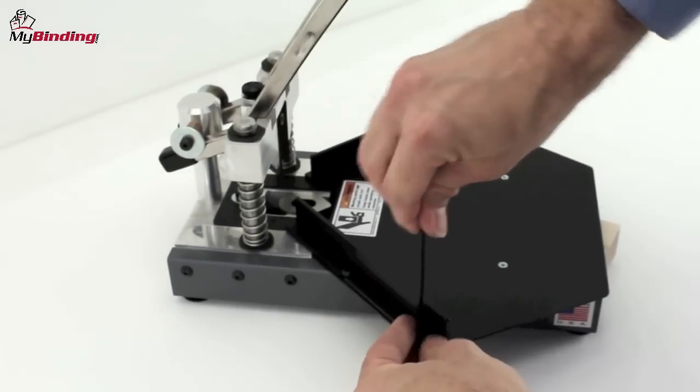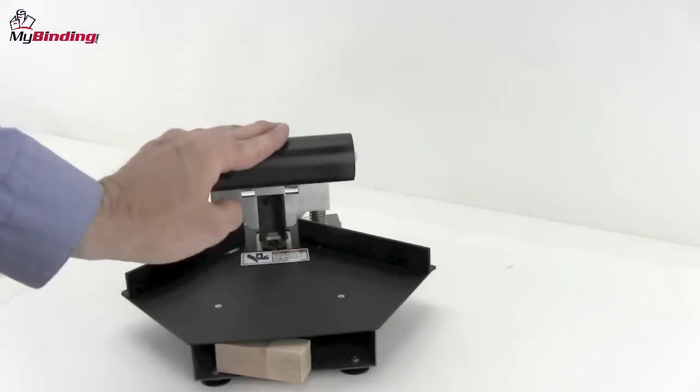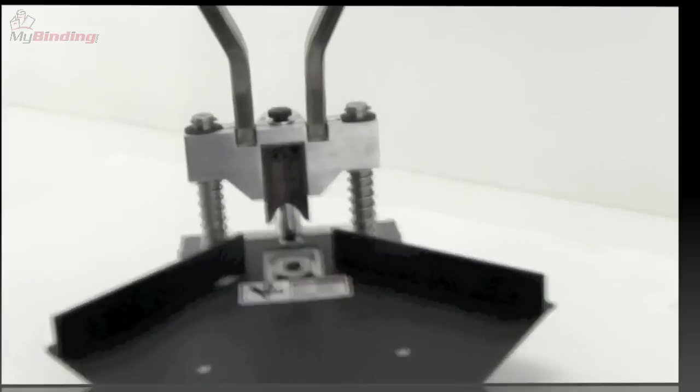The smaller Allen wrench is used for adjustment and centering of the fence for the table. That's it. That's the Lassco Wizer CR177 Corner Rounder.